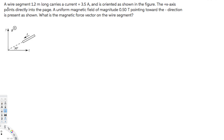Let's do this problem. The question asks: a wire segment 1.2 meters long carries a current of 3.5 amperes and is oriented as shown in the figure. The positive x-axis points directly into the page, so the positive x-axis is going into the page.